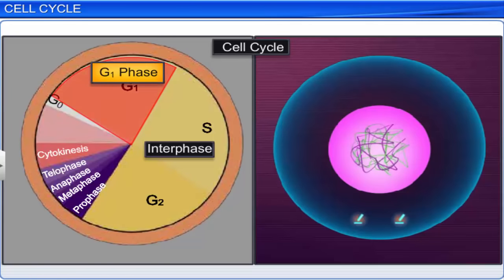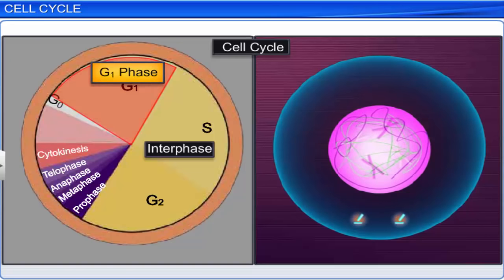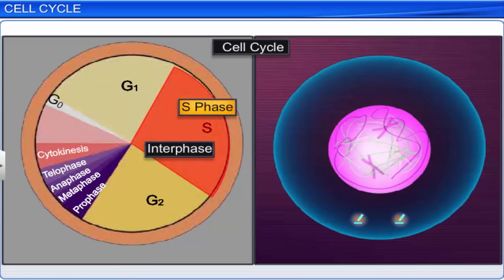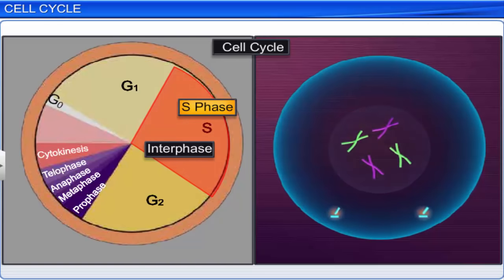During the G1 phase, or the first growth phase, normal cell functions occur. The cell continues to grow and remains metabolically active, but the DNA doesn't replicate. In the S phase, or synthesis phase, the DNA synthesizes or replicates, and the amount of DNA in the cell doubles without any increase in the number of chromosomes.